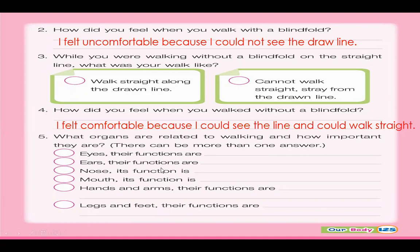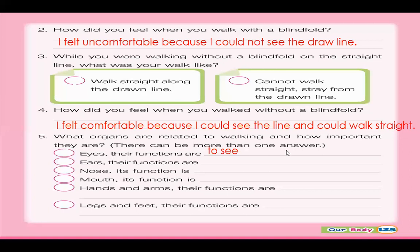Number five: what organs are related to walking and how important are they? There can be more than one answer. Eyes — their function is to see. Number two: ears. We also have hands and arms — their functions are to help balance while walking and to take steps. Legs and feet — their functions are to take steps.